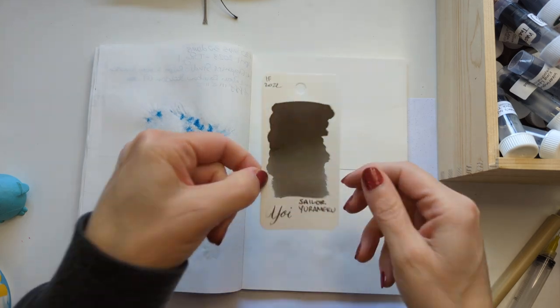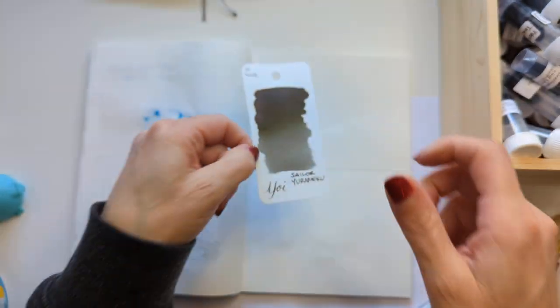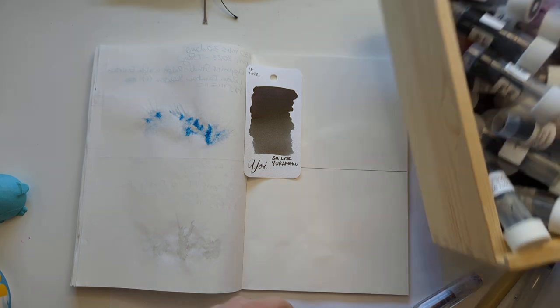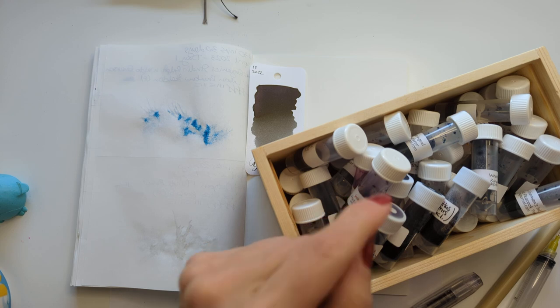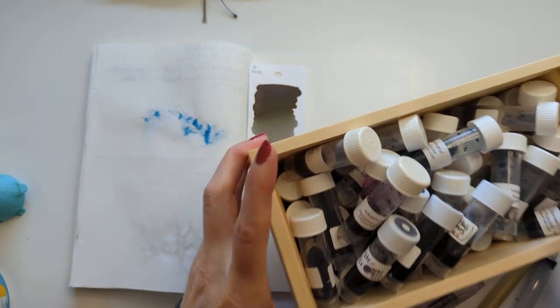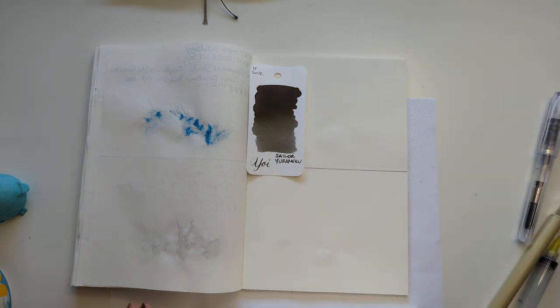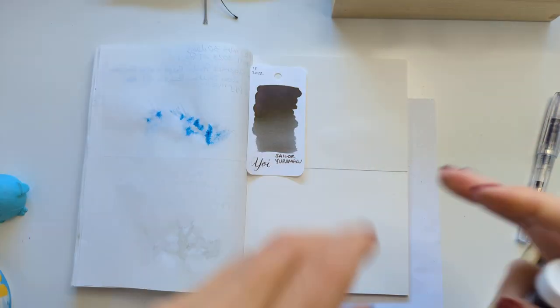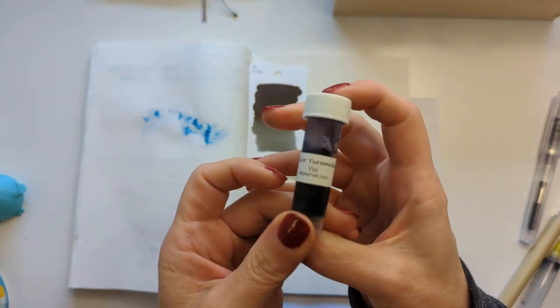Which is Sailor Sailor Yoramaku Yoi. That's in here and it's underneath all this stuff, so I'm gonna pull this here and pause once I have found it. Well I'll unpause once I found it. Okay we have found it. This one was from one of the ink flights. Now I gotta pick a pen.